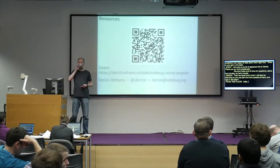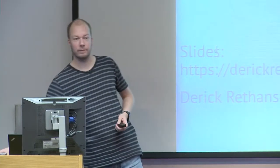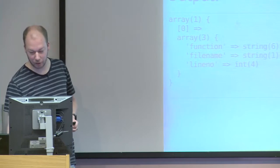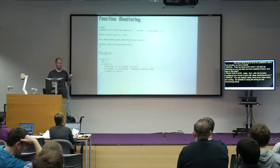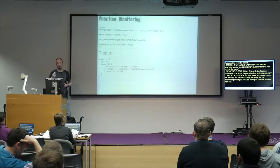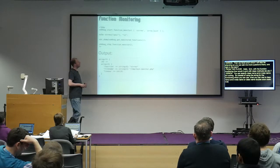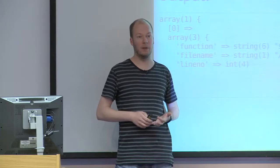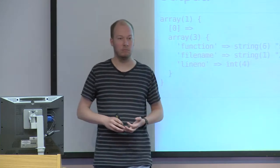Question about function monitoring with class methods: you can specify class name arrow method name or class name double-colon static method name as a string. So instead of just a plain function name string, you use class name->method_name or ClassName::staticMethodName. I might at some point extend this to accepting a callable as well, but I haven't done that yet.